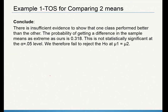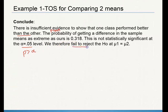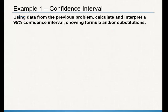What does the conclusion look like? There is insufficient evidence to show that one class performed better than the other. Here's your interpretation of your p-value: the probability of getting a difference in the sample means as extreme as ours is 0.318. It's not statistically significant at the alpha equals 0.05 level because p is greater than alpha. Therefore we fail to reject the null that mu₁ equals mu₂. Notice this is in context: there's insufficient evidence to show that one class did better than the other.